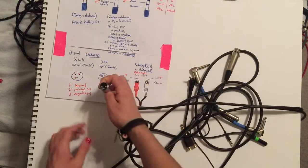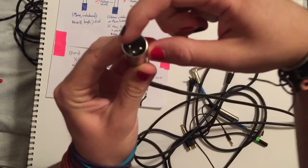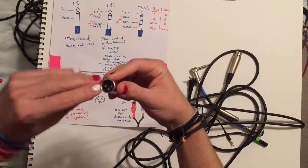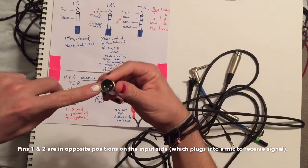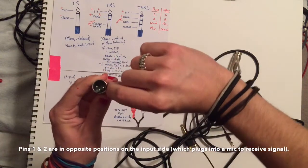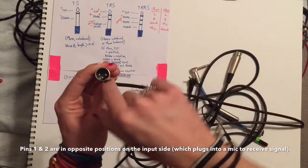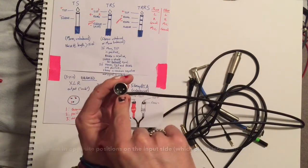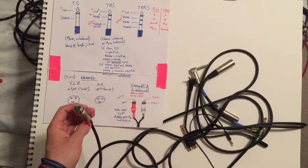On our output we have three pins, one, two and three. So we have ground on this side and then we have the two pin which is positive and then the three pin which is negative. This does the same thing that the TRS cable does, it's just a different configuration of the same function.